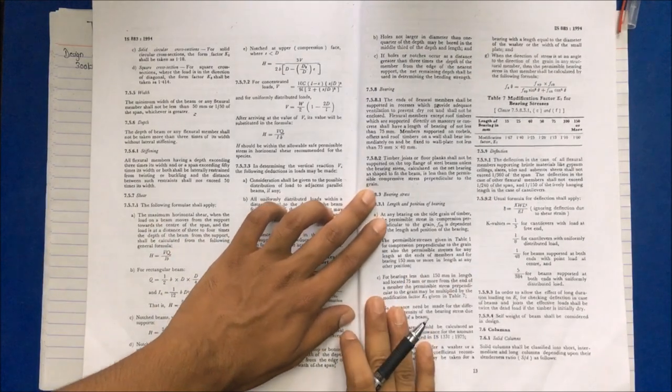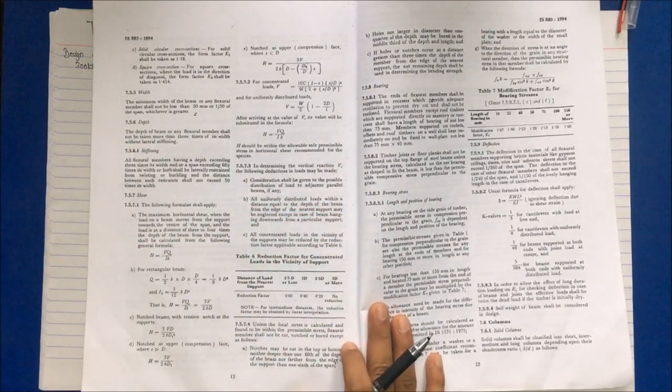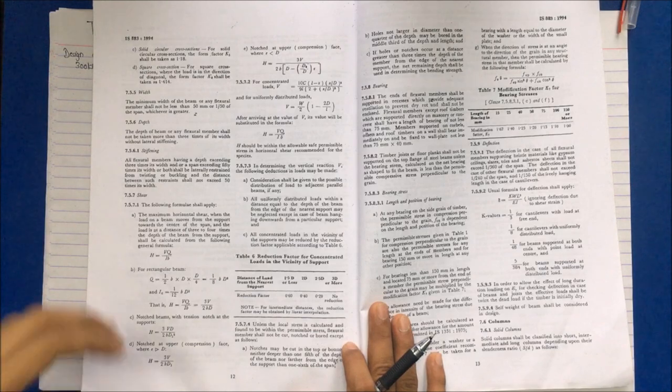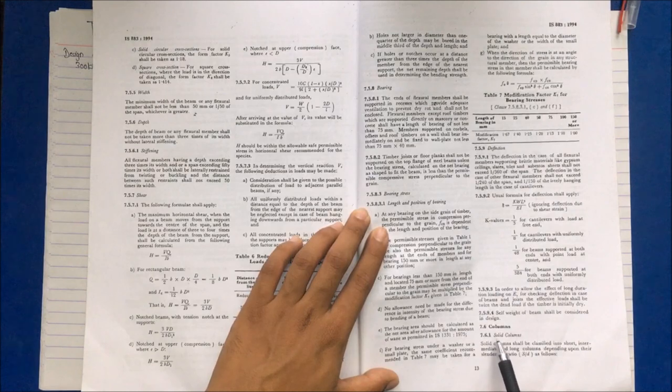In this video we'll discuss timber design, specifically column design for timber sections. Before that, at page number 13 of IS 883, you can see column types.